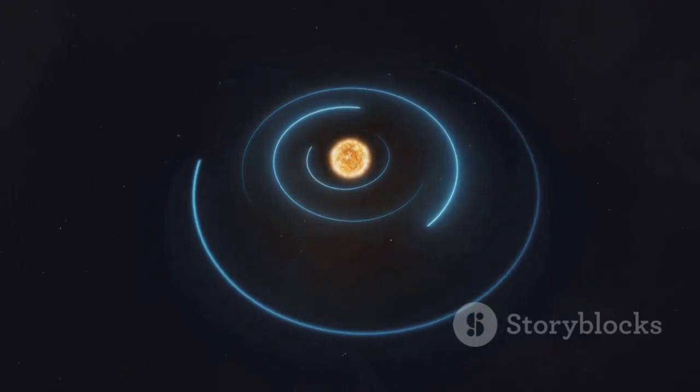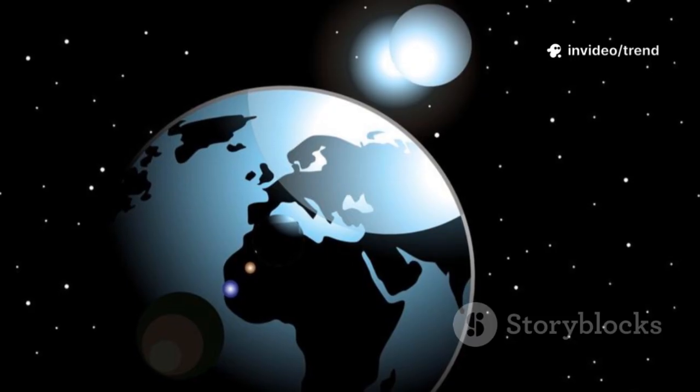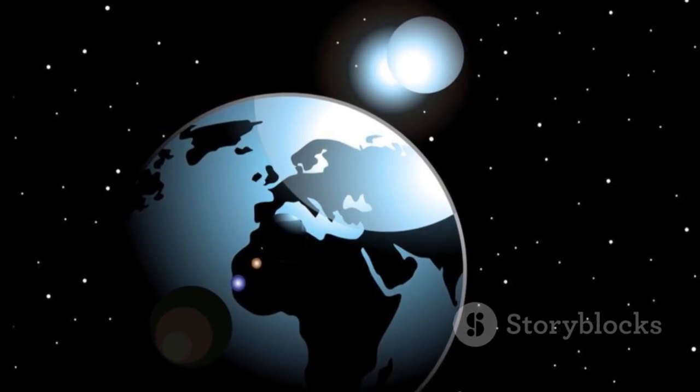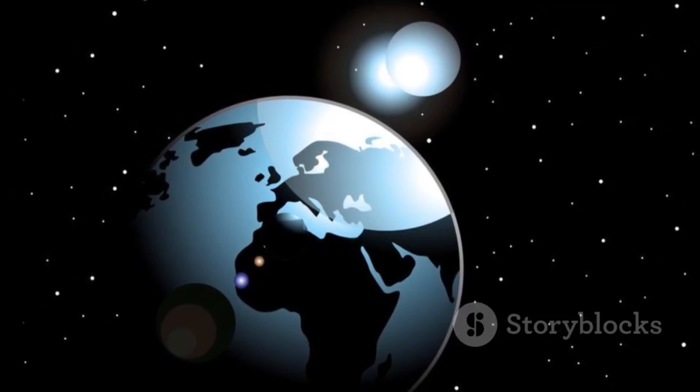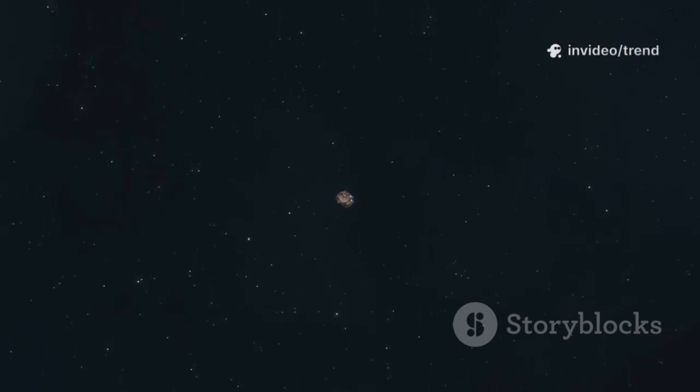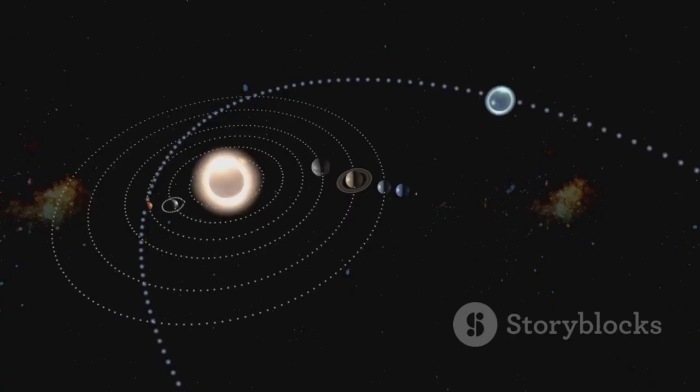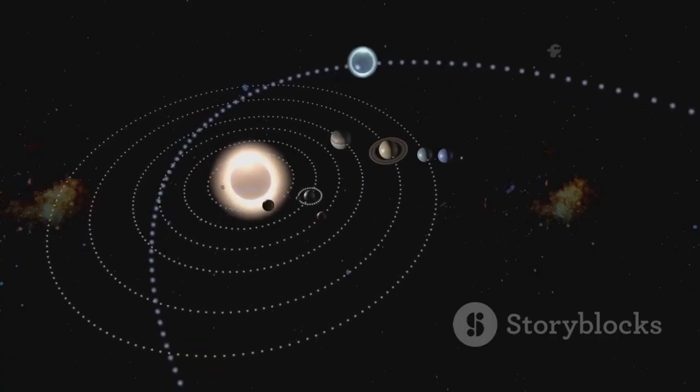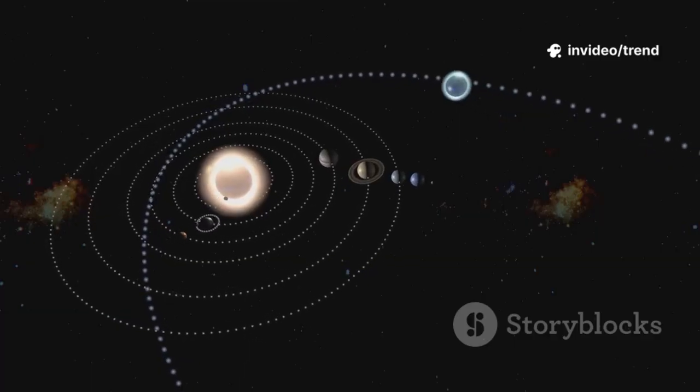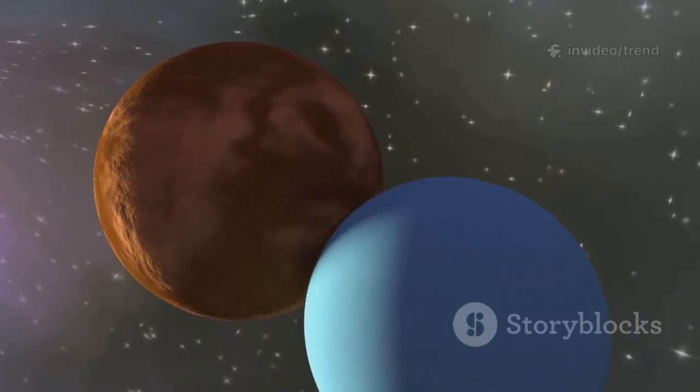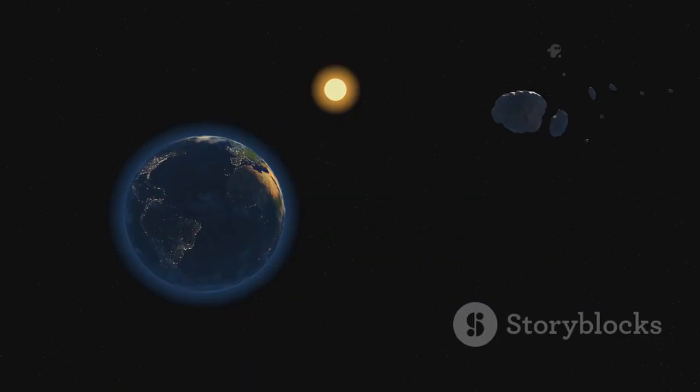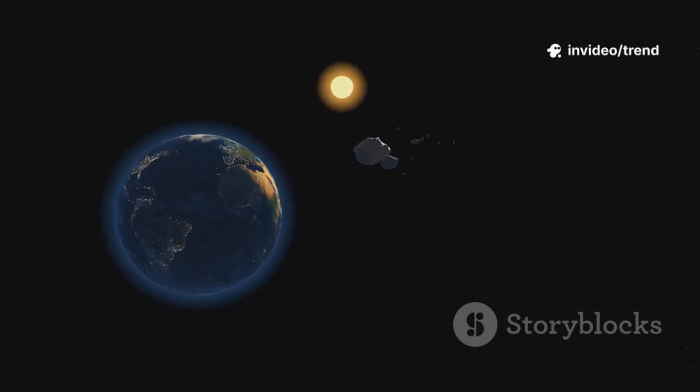Our stable orbit puts us in the Goldilocks zone, not too hot, not too cold. This perfect distance from the sun allows life to thrive on Earth, making our planet unique in the solar system. But what if a massive new dancer, a passing star, entered the scene? Even a brief visit from another star could have dramatic consequences for our solar system. Its gravity could disrupt the balance, pulling planets off their paths. Orbits could stretch, shrink, or even break apart entirely, sending worlds careening into new, dangerous trajectories. The result? Chaos on the cosmic dance floor. Planets might collide, be flung into deep space, or spiral into the sun. Here's how that could unfold and why the balance of gravity is so crucial to the survival of our solar system.